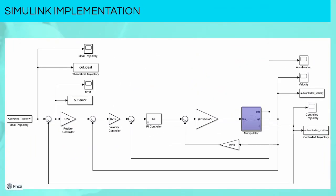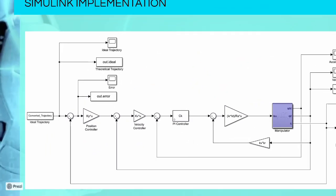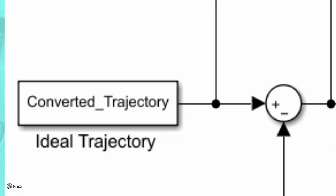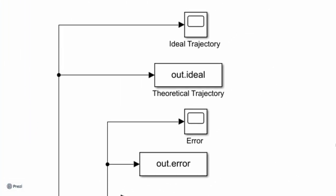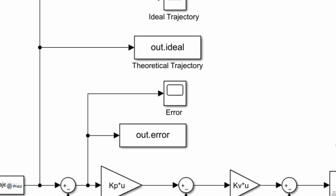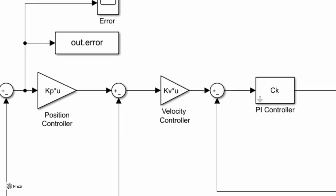All these controllers have been implemented with Simulink. First, we can recognize, at the left, the converted trajectory. It was converted in MATLAB using the time series command. Then, we can see all the blocks, like scope and to workspace, which have been used to export data from Simulink to MATLAB. Moreover, we can clearly recognize the three blocks used to implement the position controller, the velocity controller, and the acceleration controller.